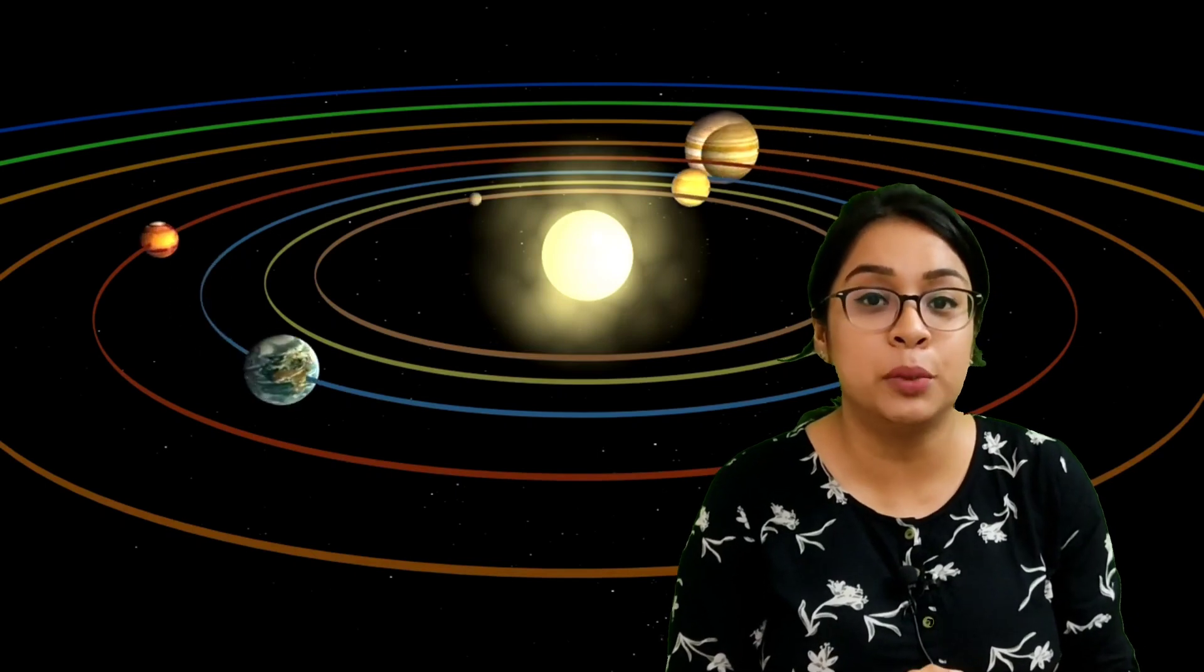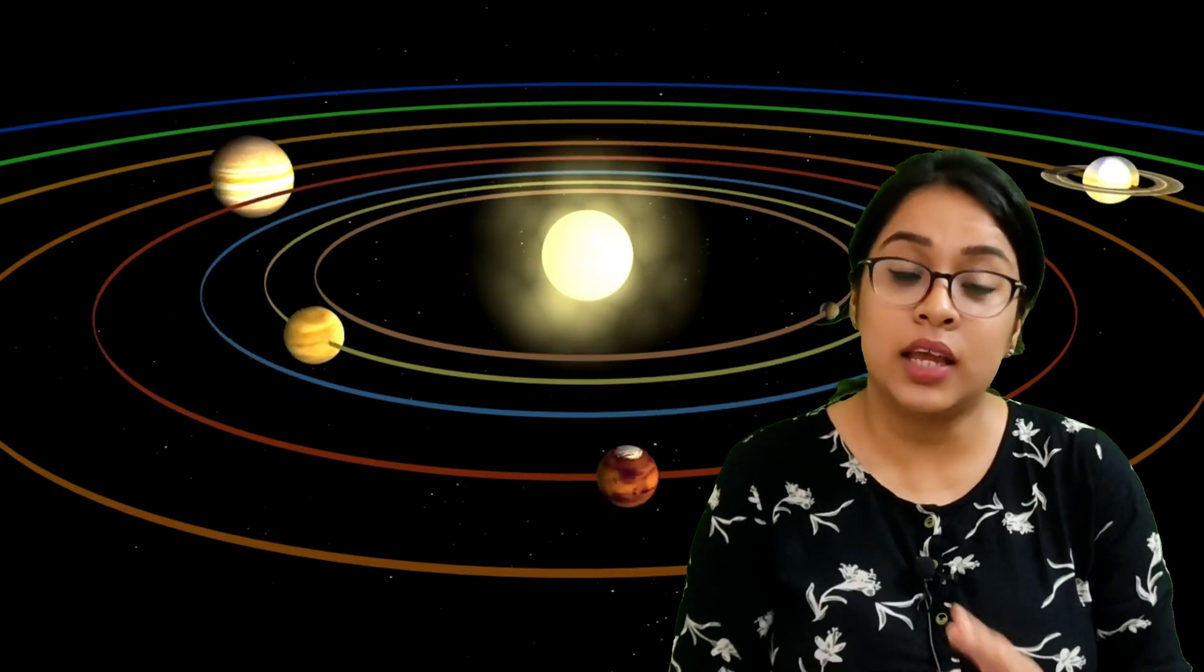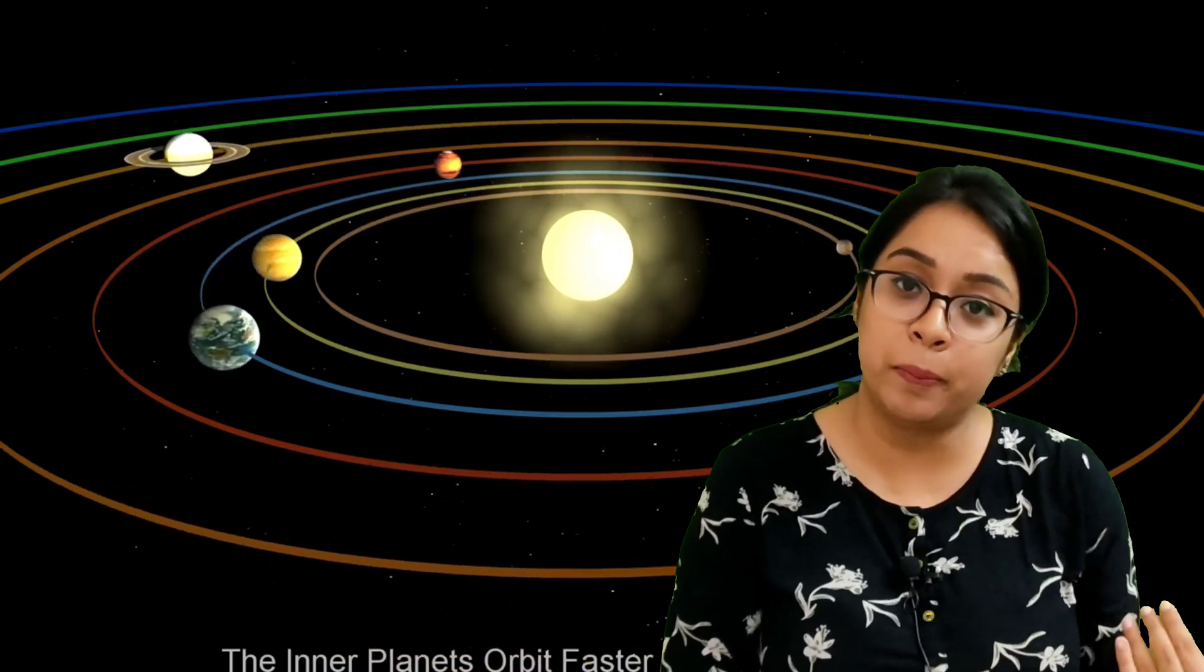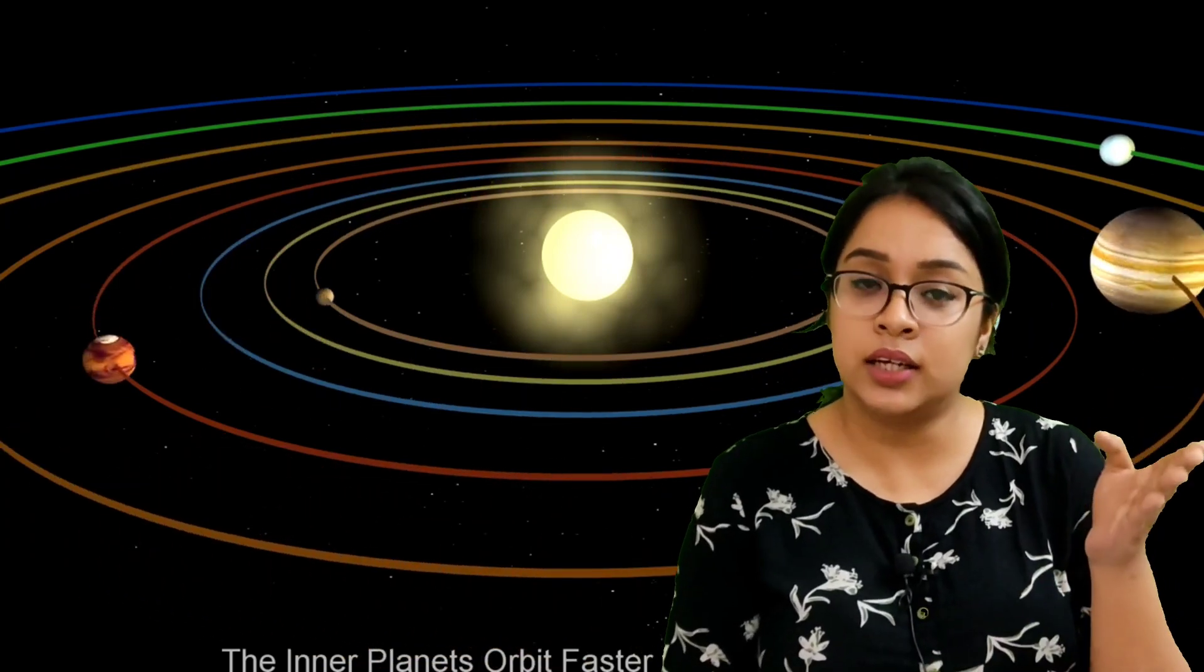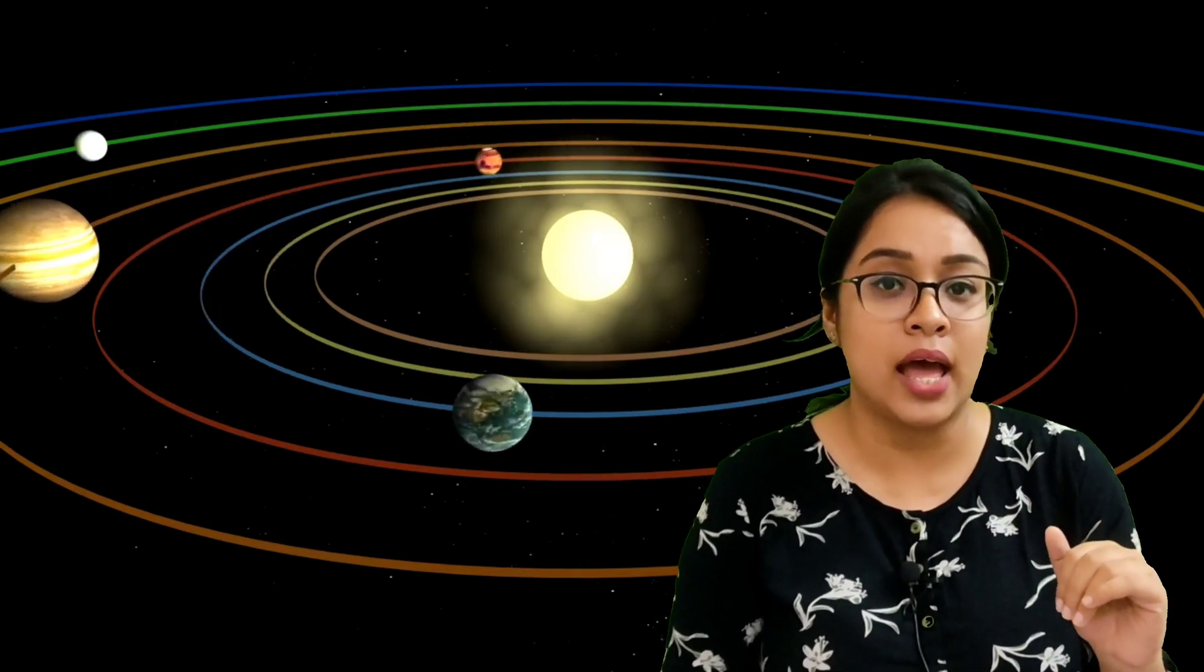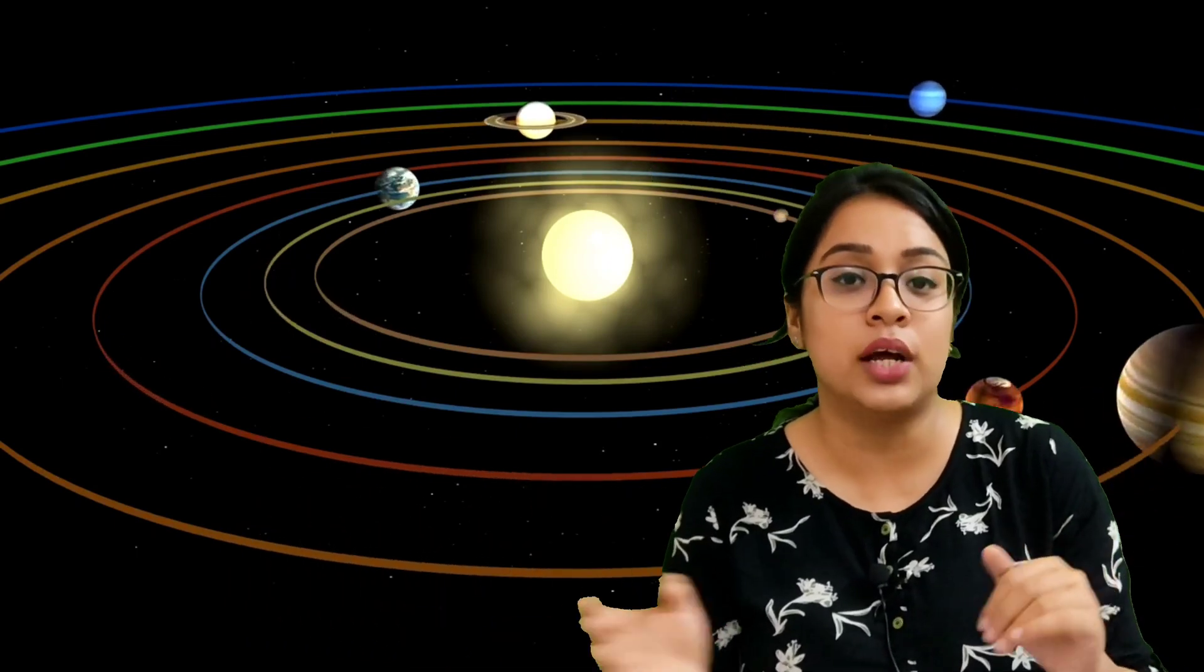Now, we will know about the planets. In the solar system, the eight planets are divided into inner planets and outer planets. The Mercury, Venus, Earth, Mars are considered as inner planets and Jupiter, Saturn, Uranus and Neptune are considered as outer planets as they are far from the sun.